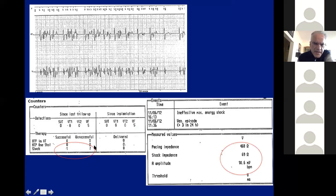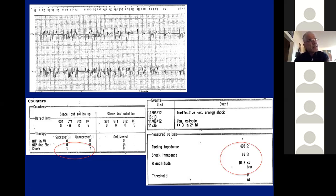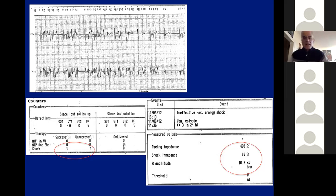After the shock, there is a lot of noise. Multiple shocks may have actually damaged the lead further — the conductor is worse than before. The device counters show seven unsuccessful shocks, delivering shock after shock because it was seeing more and more noise. Pacing impedance is surprisingly normal, as is high voltage impedance, and R-wave is okay. This illustrates that noise may precede impedance changes as a sign of lead disintegration.